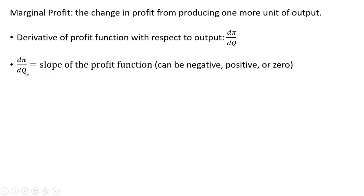Marginal profit, or the derivative of the profit function with respect to output, is the slope of the profit function. A derivative is nothing more than a slope function. This marginal profit or slope can be negative, positive, or zero — in other words, producing one more unit of output could reduce profit, increase profit, or keep profit unchanged.